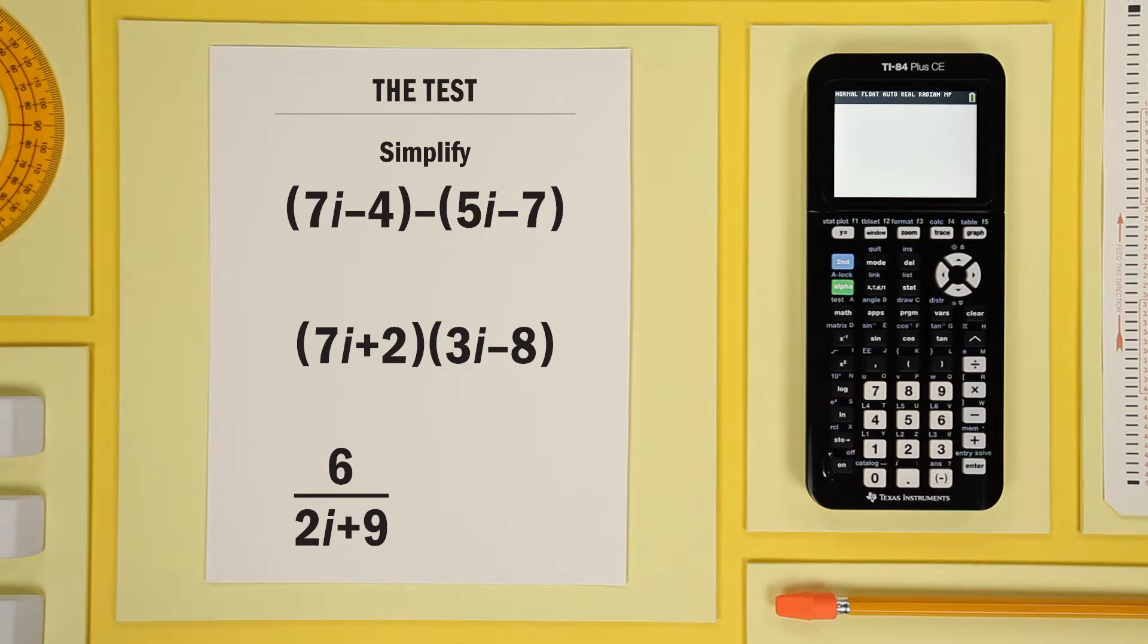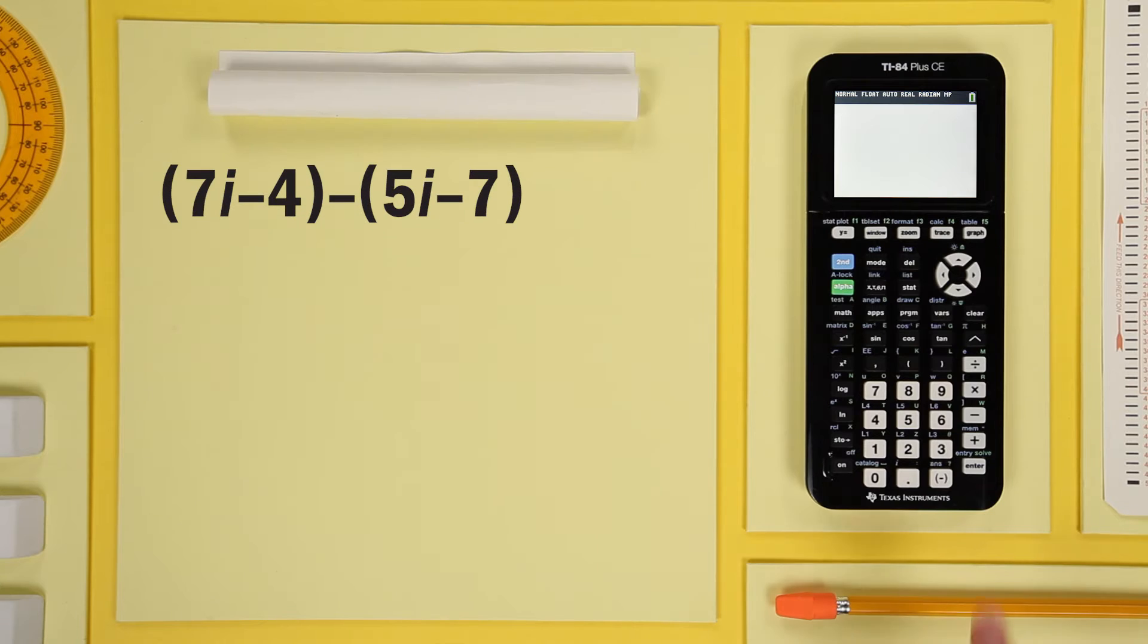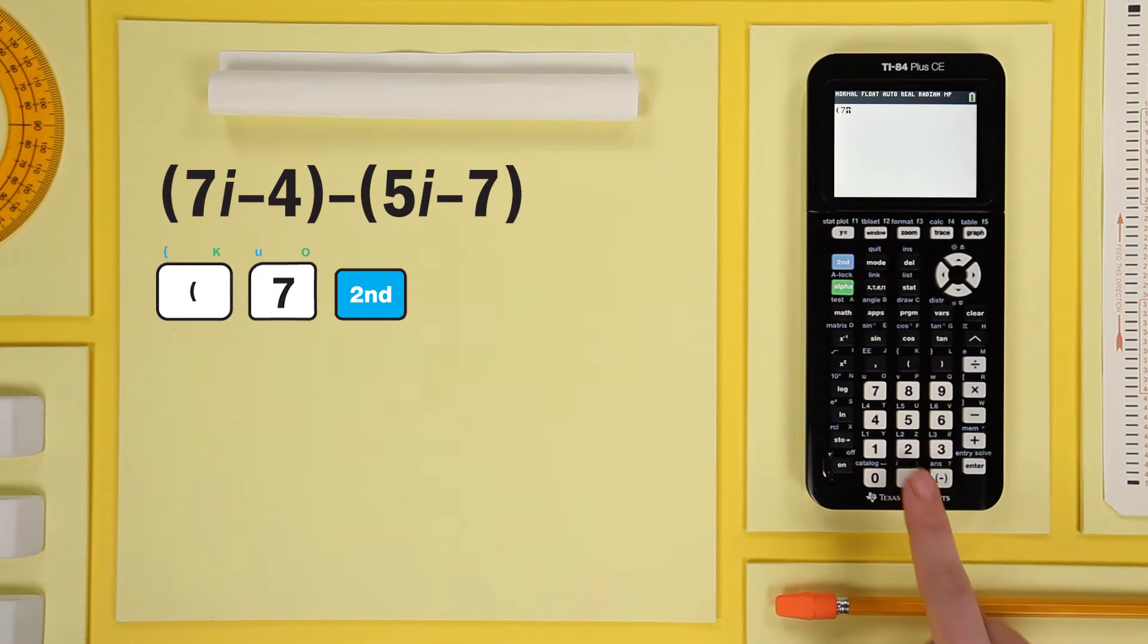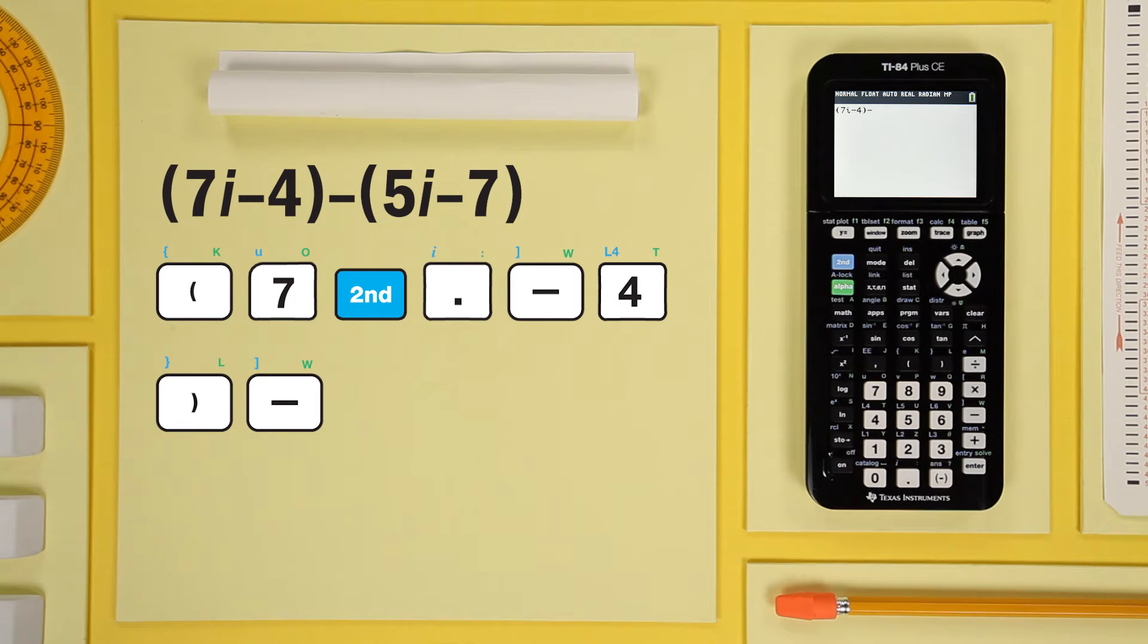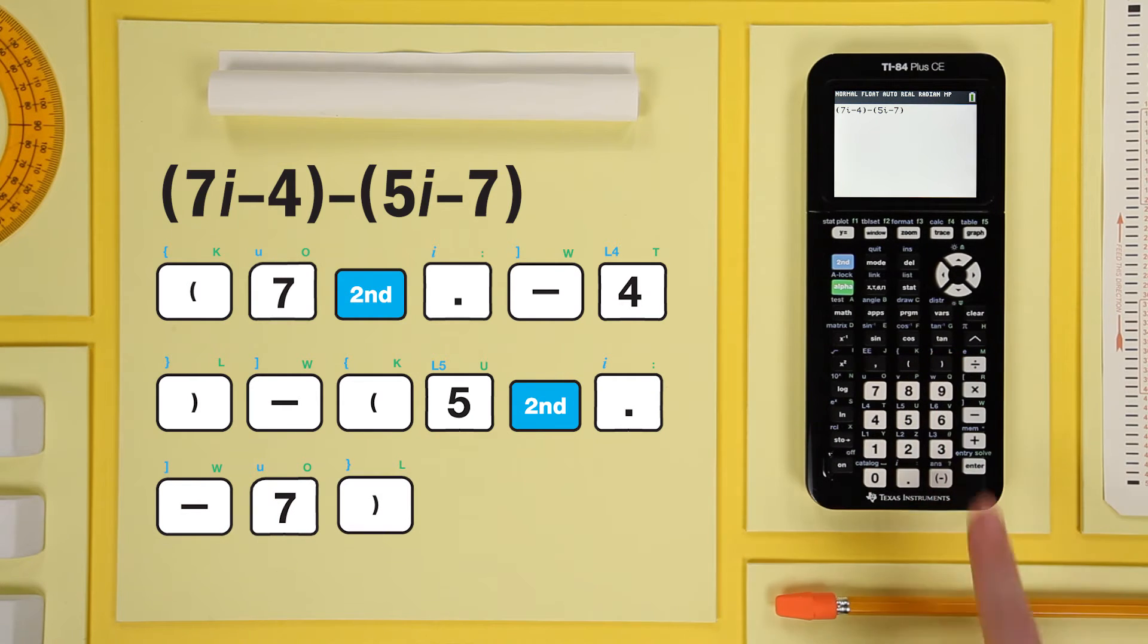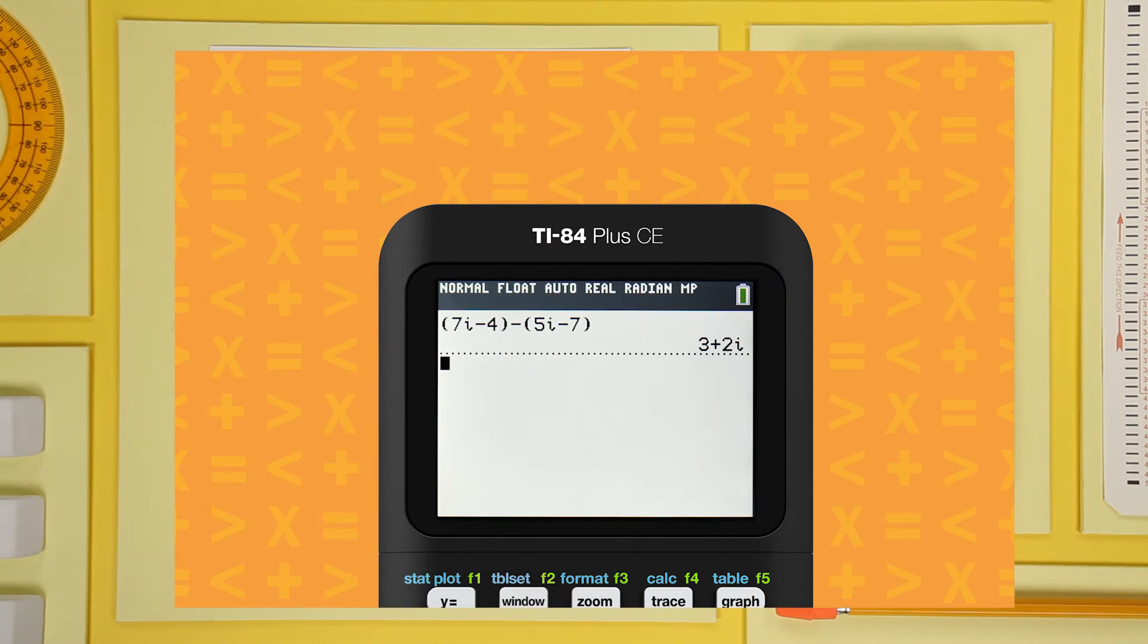Now let's look at an example of something you might see on your exam. Open parentheses, 7, now the second key to activate the blue i, minus 4, close parentheses, and minus. Plug in the second expression and enter to get 7i minus 4 minus 5i minus 7 is equivalent to 3 plus 2i.